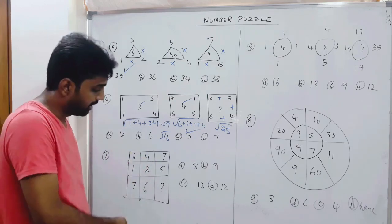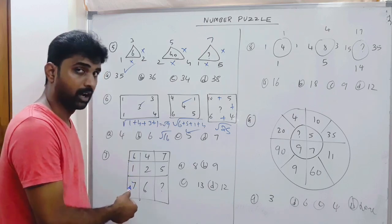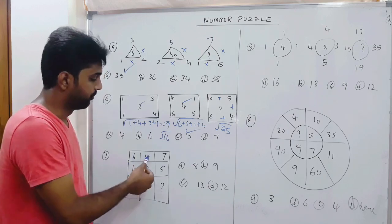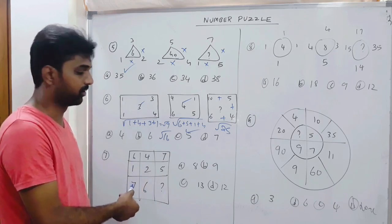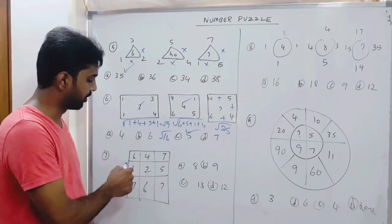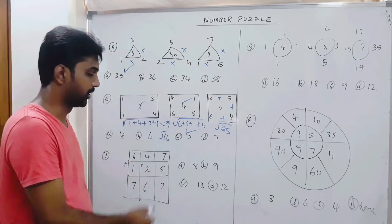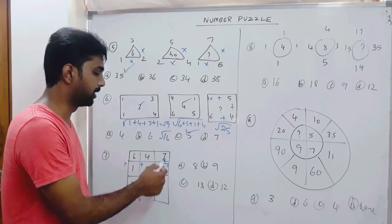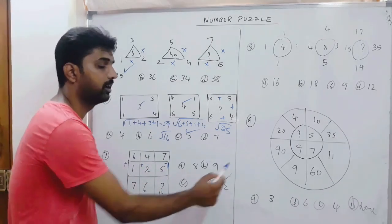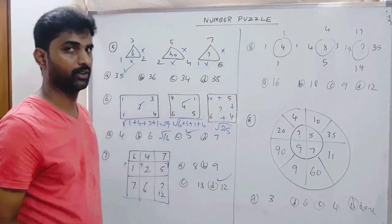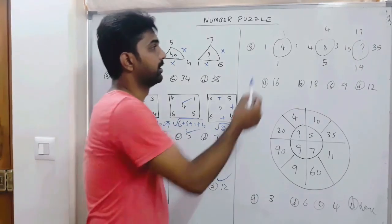Let us try vertically: 6 plus 1 is 7, and 4 plus 2 is 6. Confirming it is following a plus pattern vertically. So 7 plus 5 is 12, and 12 is the right answer.